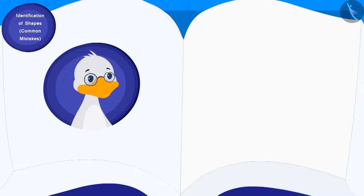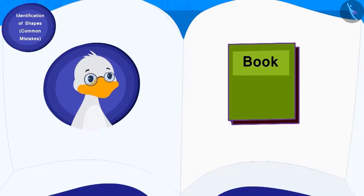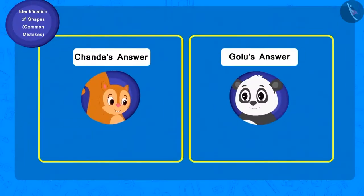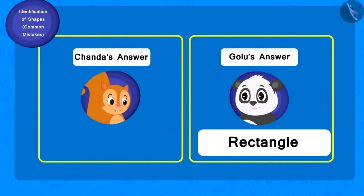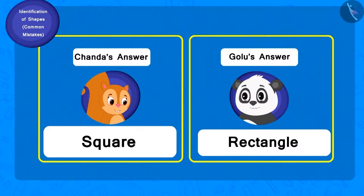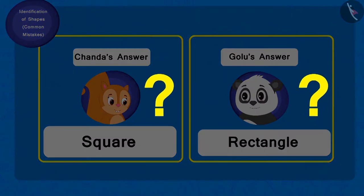Now Chacha showed a book and asked, what shape is it? Golu immediately wrote rectangle as his answer. And Chanda wrote square. Children, can you tell whose answer is correct?